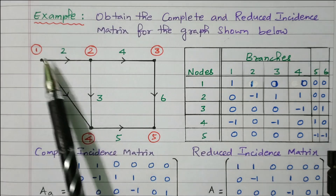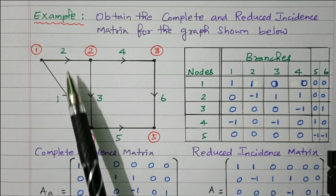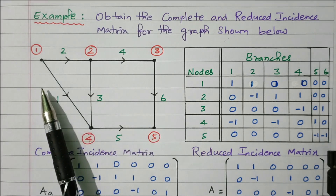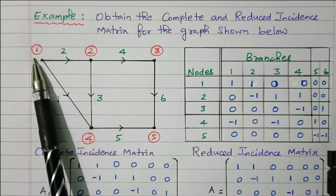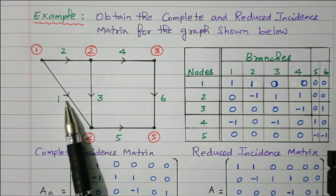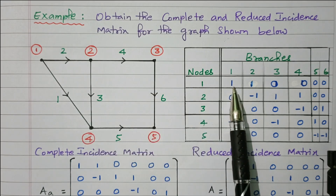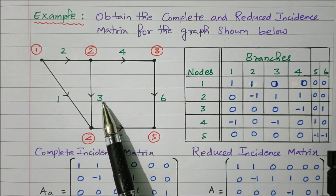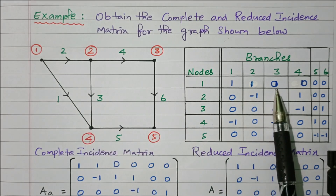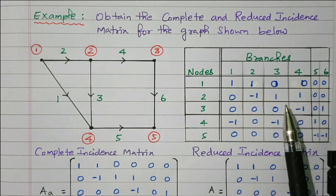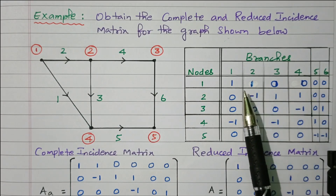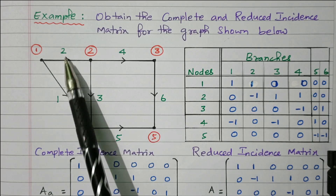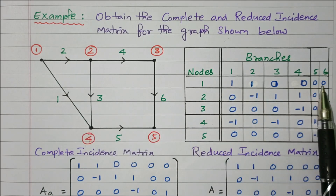Now we will see how the branches are connected. The rules are: not connected means zero, away from the node means one, and towards the node means minus one. For node one, branch one is going away — represented by one. Branch two is also going away — one. Branches three, four, five, and six are not connected — zero. For node two, branch one is not connected — zero. Branch two is coming inside — minus one. Branch three is going away — plus one. Branch four is also going away — plus one. Branches five and six are not connected — zero.